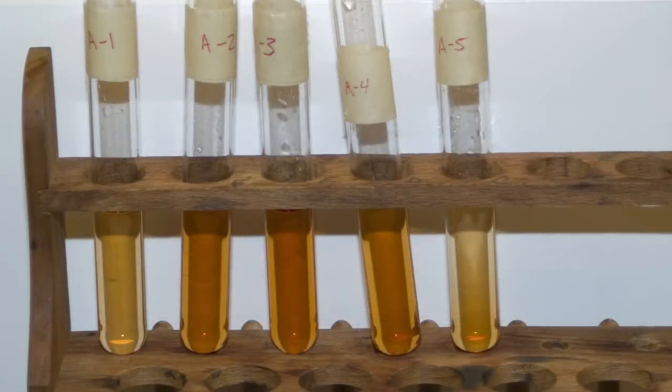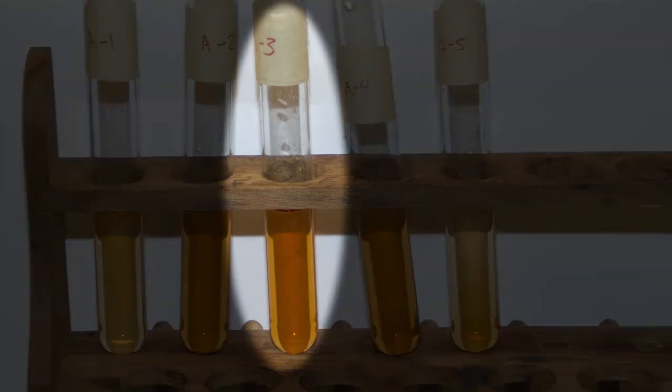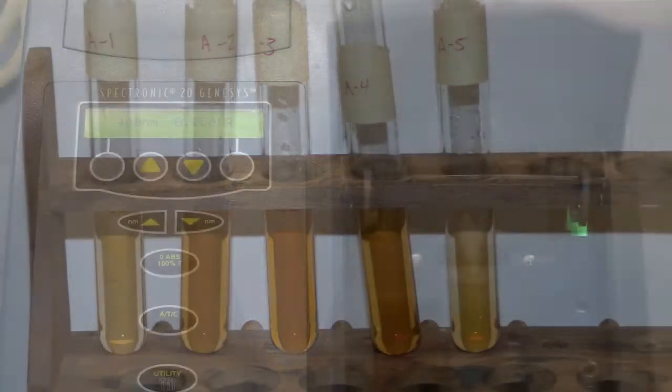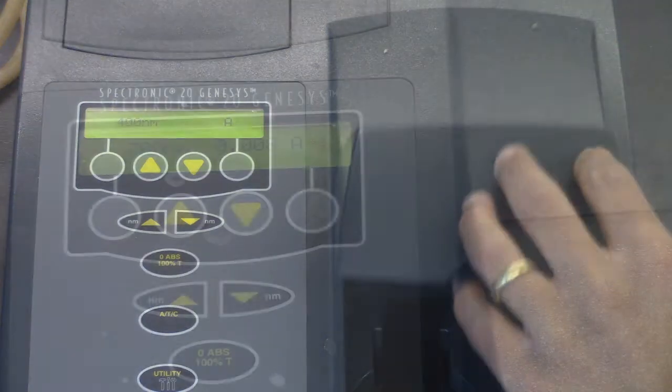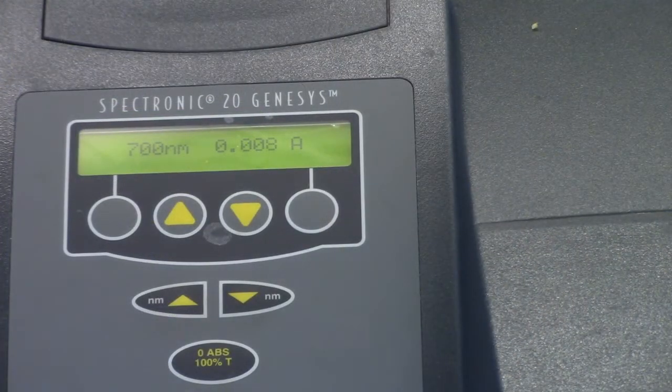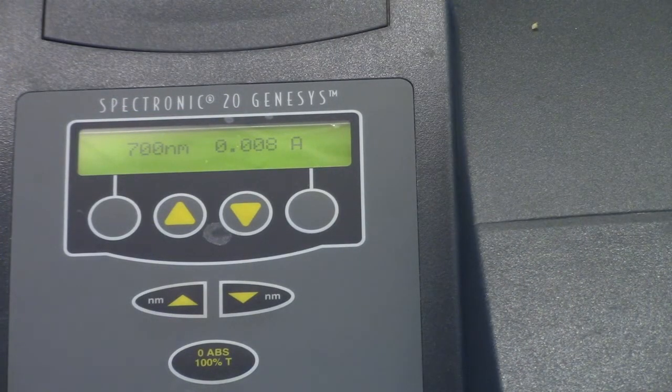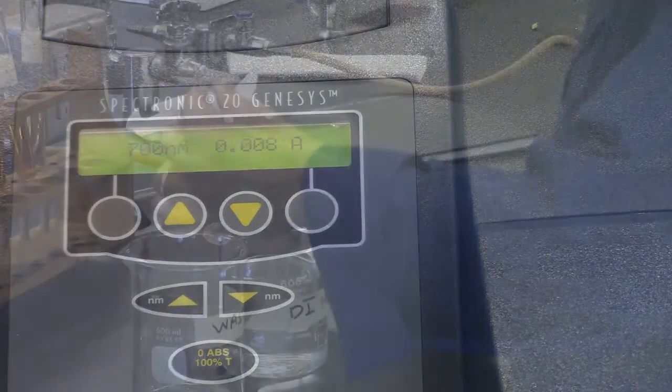To find out which wavelength that is, we will use sample A3, the 50-50 mix of iron-3 and thiocyanate. The range of wavelengths tested will be from 400 nanometers to 700 nanometers in 25 nanometer increments. Record the absorbance at each wavelength.